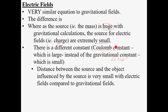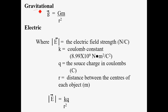So a really small number for the gravitational constant, a really big number for Coulomb's constant. The distance between the source and the object it's influencing is usually huge with gravitational fields, like between different planets. When we're talking about electric fields, it's usually a very small distance. This is just a reminder of the gravitational equation so we can see the parallels between it and the equation we'll be using for electric fields — all of this straight from your data booklet.